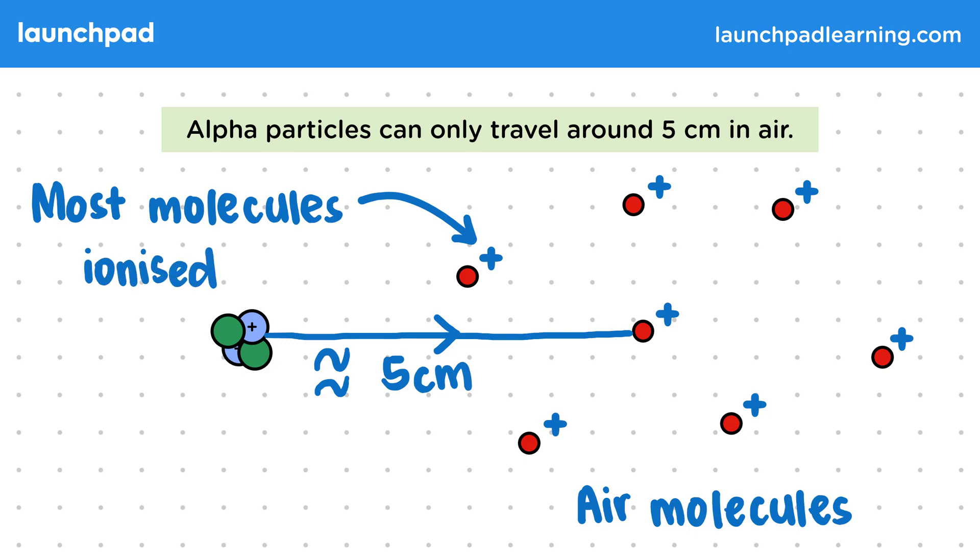Now for your exams, you won't need to explain the effects of alpha particles on air in this much detail. Or remember this specific range. But you should be able to recall that the particle doesn't travel far in air, but still causes a lot of ionisation.